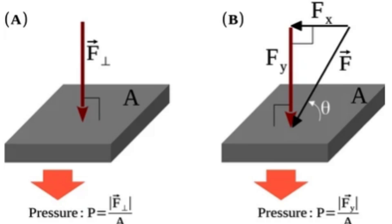Overburden load: when layers of rocks, sediments, and soil accumulate over geological time scales, they create a significant load due to their weight. This overburden load is a critical factor in the formation of confining pressure. The deeper the rock or mineral is within the Earth's crust, the greater the weight of the overlying material, resulting in higher confining pressures.